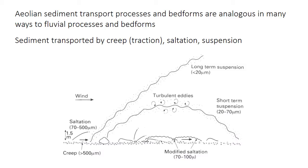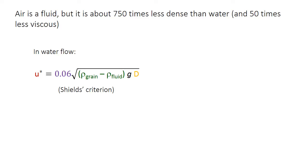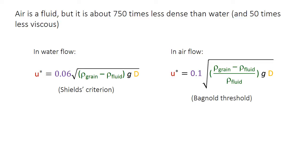Sediment transport by wind has a lot of similarities with transport by water. Larger grains can move by creep, like sliding along the ground in traction motion. The smallest grains may be carried in suspension via turbulent eddies. And the bulk of the sand grains in wind transport move by saltation — these short-distance hops or jumps along the bed. The reason for these similarities is that air is a fluid, just like water is a fluid. You may remember the Shields criterion, which describes the water velocity required to move a particle of diameter d. A very similar equation, with a slightly different constant term, applies to sediment transport by air — only it's called the Bagnold threshold.